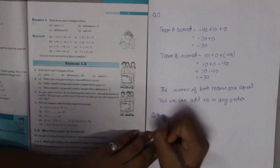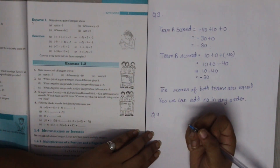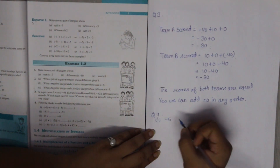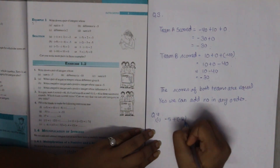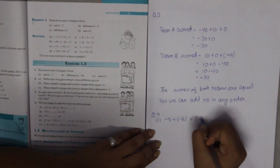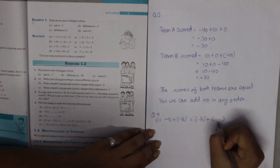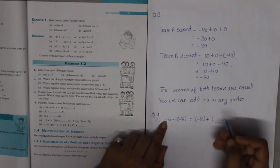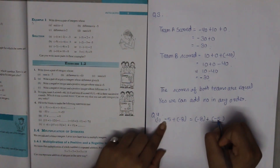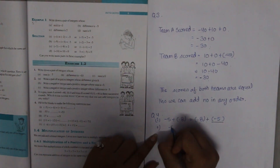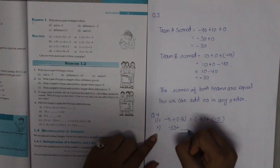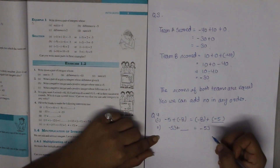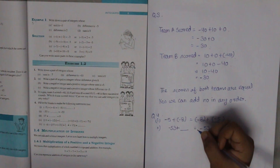Question Number 4: Fill in the blanks to make the following statements true. Part A: minus 5 plus minus 8 equals minus 8 plus blank. The blank will contain minus 5. Part B: minus 53 plus blank equals minus 53. We need the same number, so if we add 0 we get the same answer — the blank contains 0.